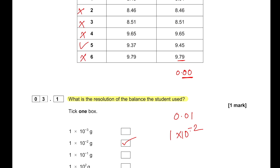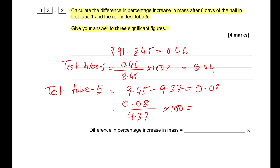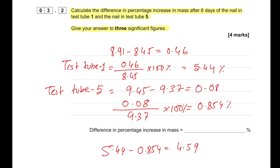For test tube 5: 9.45 − 9.37 = 0.08. Then 0.08 ÷ 9.37 × 100% = 0.854%. Now the difference in percentage increase in mass: 5.44 − 0.854 = 4.59. So the answer to three significant figures is 4.59%.